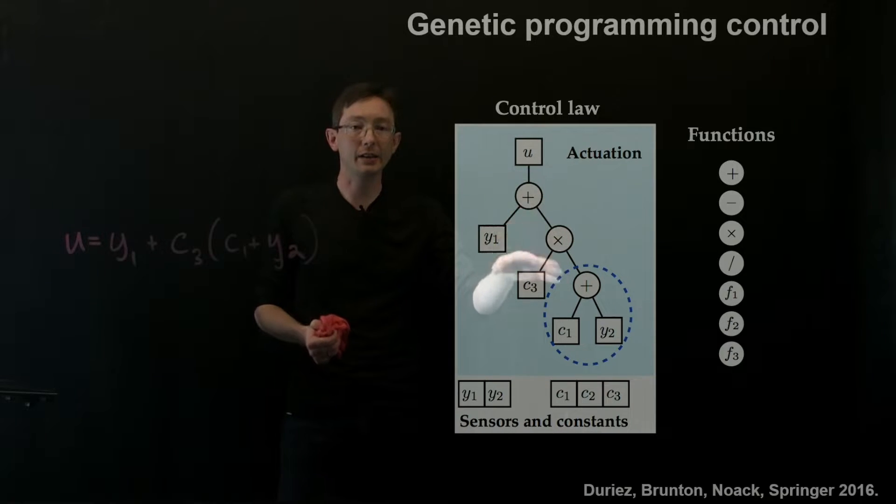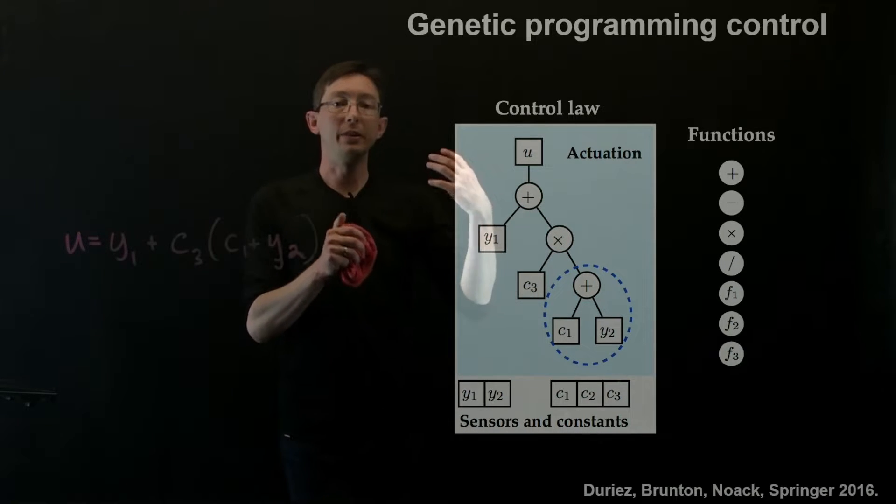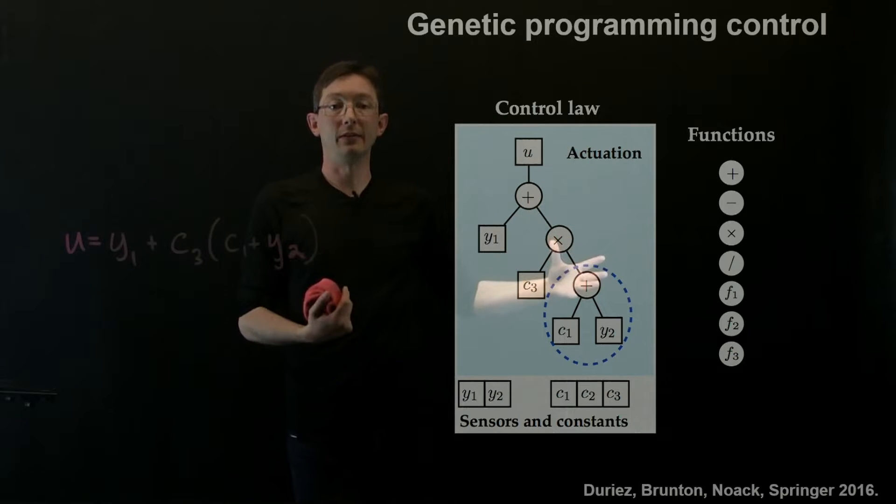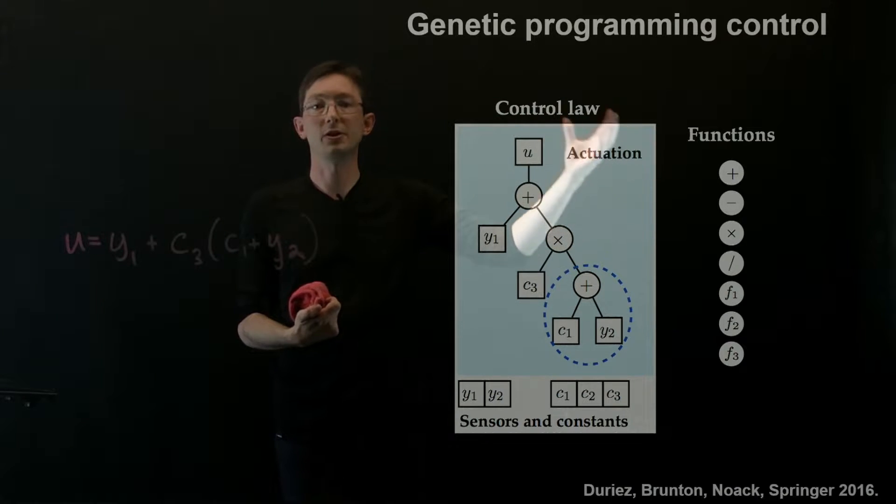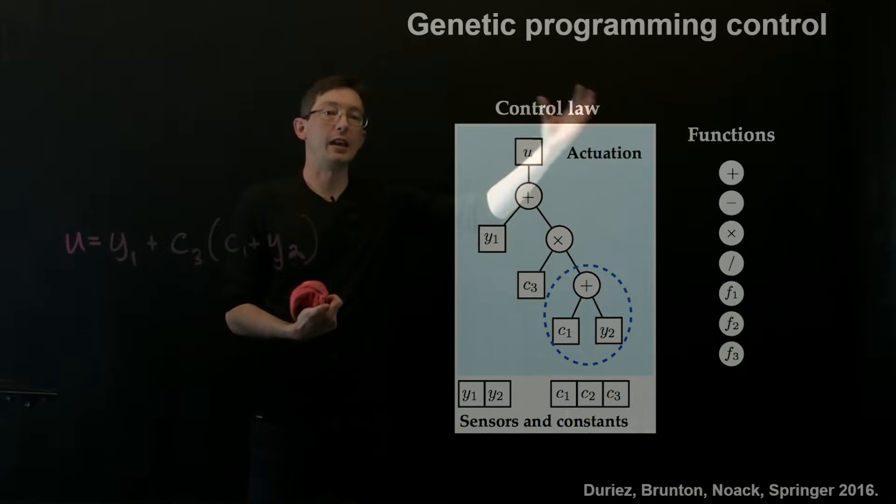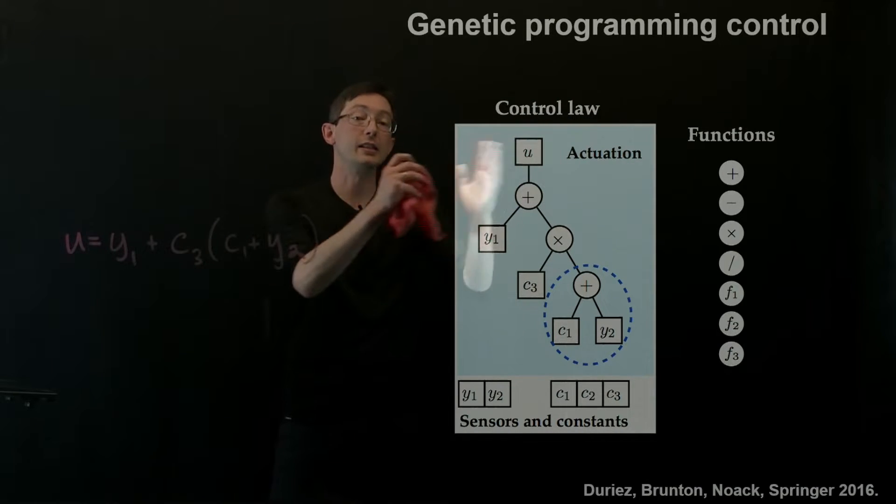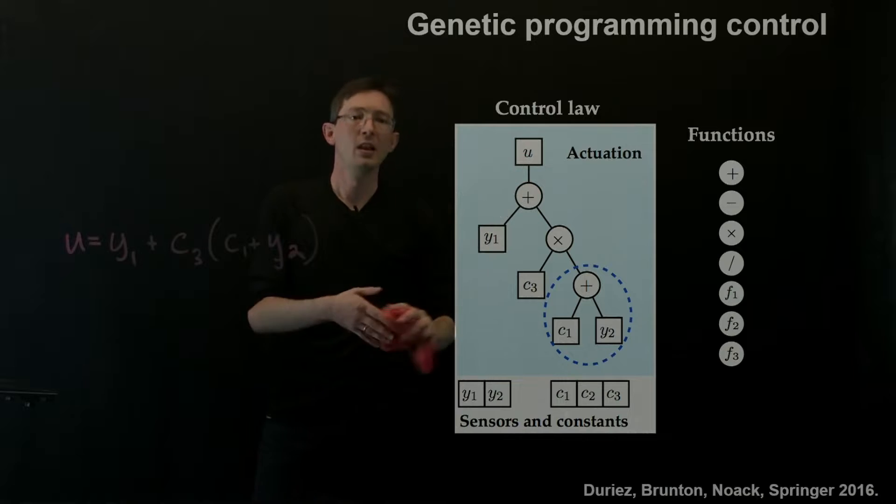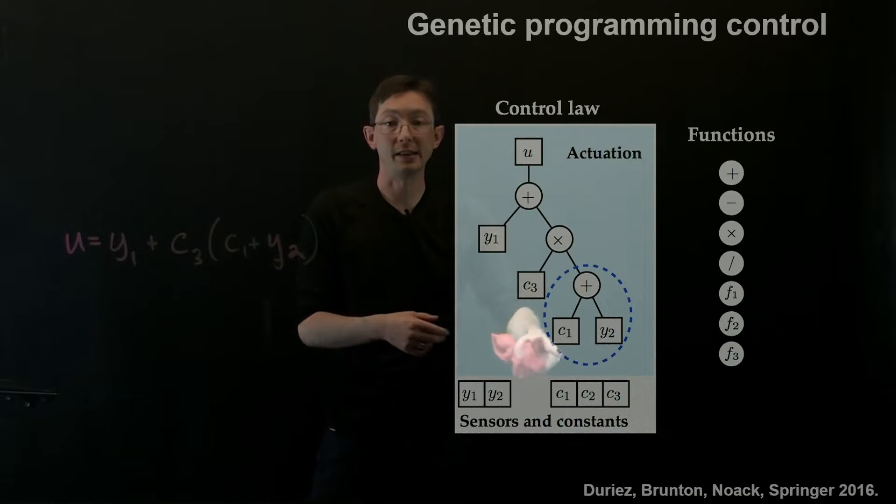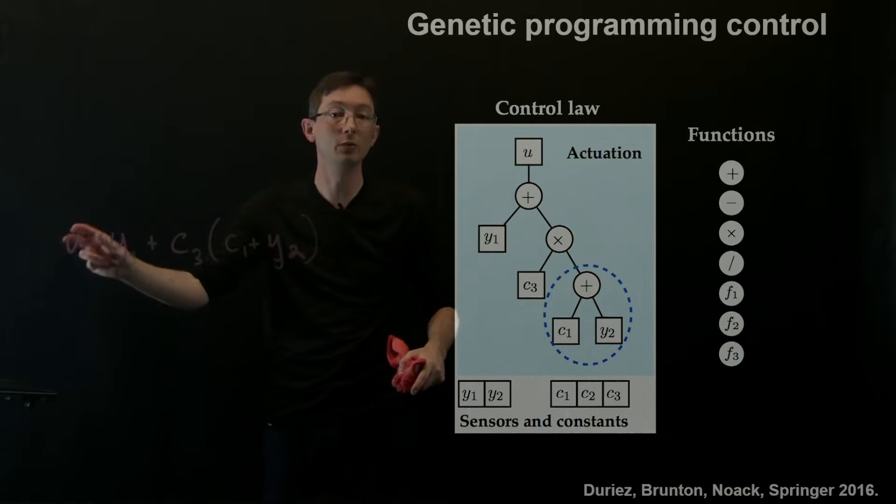And that is a candidate control law that I would then run on an experiment and see how effective it was. And I'd get an objective function and some fitness, and I could compare 15 or a thousand different control laws and see which ones are more effective. So this is just a way of parametrizing a generic function u of y.